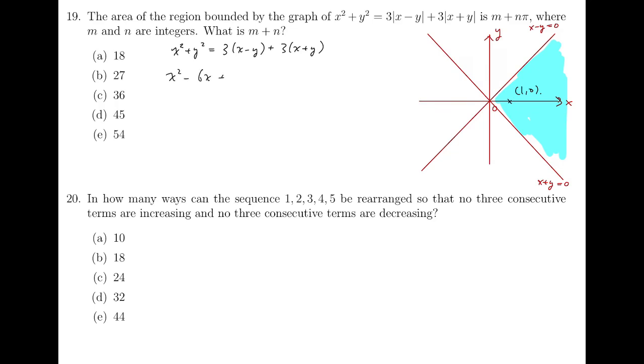So X squared minus 6X plus Y squared equals 0. X minus 3 whole squared plus Y squared equals 9. So it's a circle with center 3, 0, and radius 3. So it will look something like this. Similarly, we can consider the other three regions. And we'll also get curves like this, part of a circle.